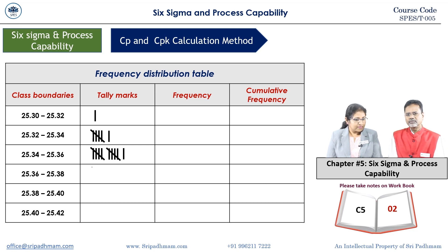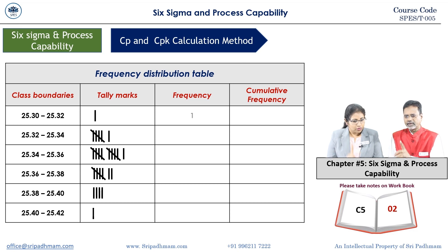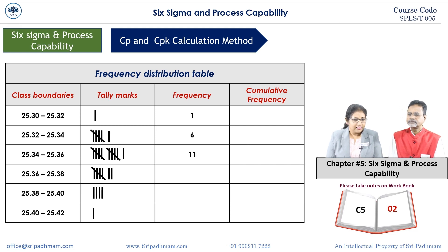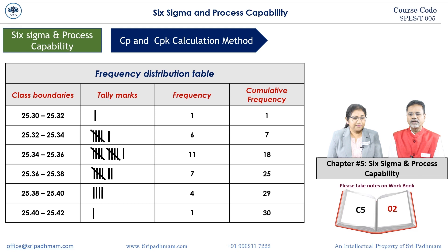Looking at this problem, the histogram shape: the frequency values going from class boundary 25.30 are: 1, 6, 11, 7, 4, 1. The cumulative frequency: 1, 1+6=7, 7+11=18, 18+7=25, 25+4=29, 29+1=30. So the frequency distribution table is now ready.